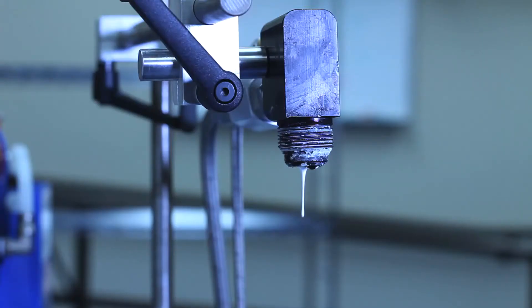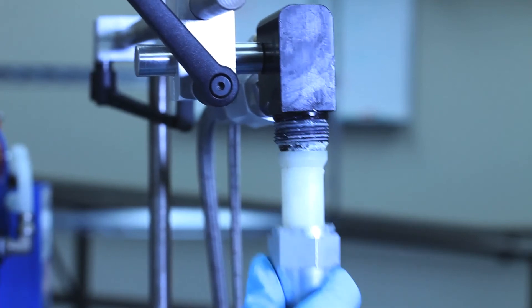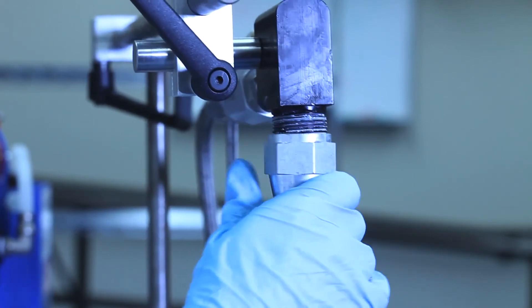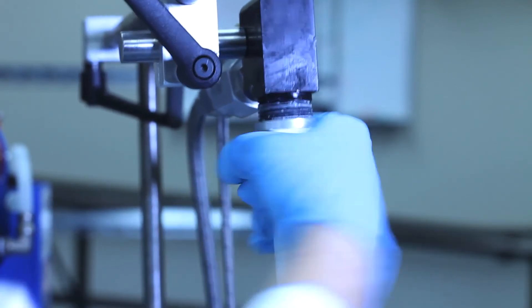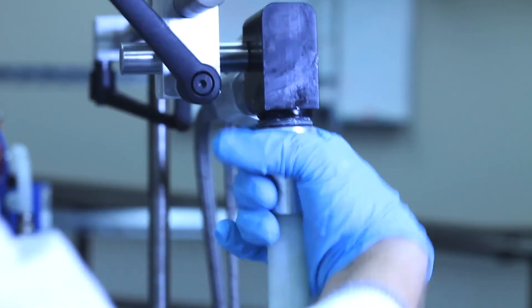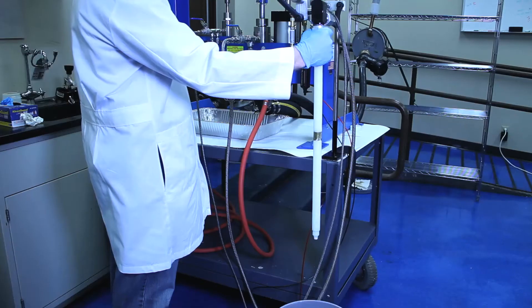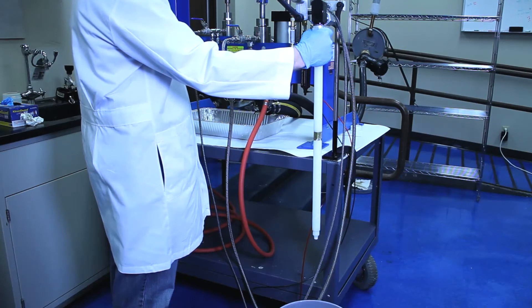Allow material to drain from the manifold and install the static mixer. Hand tighten the retaining nut onto the manifold. Do not over tighten because it may crack the static mixer. Position the now installed static mixer on the manifold over the coating device.